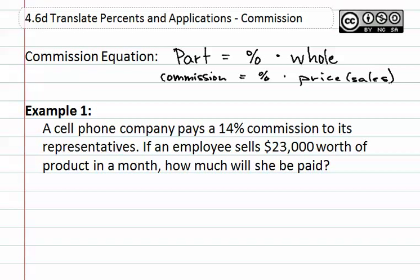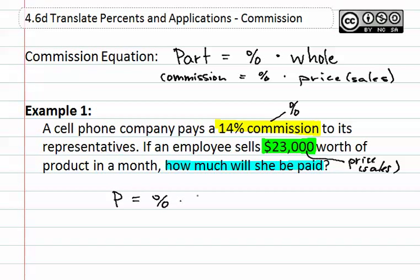In example one, a cell phone company pays a fourteen percent commission to its representatives. If an employee sells $23,000 worth of product in a month, how much will she be paid? We need to identify each of the pieces. We see that there is a fourteen percent commission — this is our percent. Next, we see that she sold $23,000, which is the price or the sales. Finally, it asks how much will she be paid, meaning they want to know how much commission will she earn. Remember that we are doing the part equals the percent times the whole.